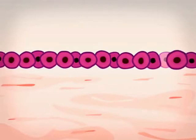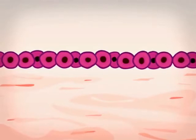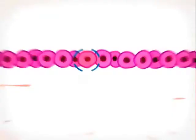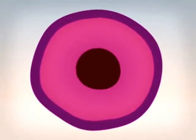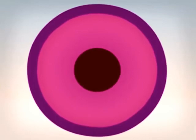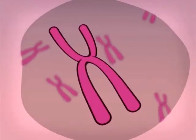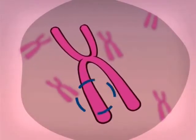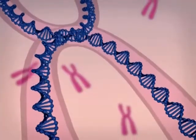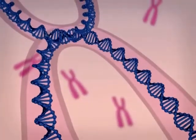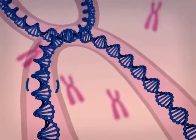Every cell is therefore programmed to multiply and die. This ordered but complex program is controlled by the center of the cell, the nucleus, which contains chromosomes containing many genes made up of DNA.